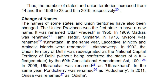Change of Names: The names of some states and Union Territories have also been changed. The United Provinces was the first state to have a new name — it was renamed Uttar Pradesh in 1950. In 1969, Madras was renamed Tamil Nadu. In 1973, Mysore was renamed Karnataka. In the same year, Lakshadweep, Minicoy and Amindivi Islands were renamed Lakshadweep. In 1992, the Union Territory of Delhi was re-designated as the National Capital Territory of Delhi by the 69th Constitutional Amendment Act, 1991. In 2006, Uttaranchal was renamed Uttarakhand, and Pondicherry was renamed Puducherry. In 2011, Orissa was renamed Odisha.